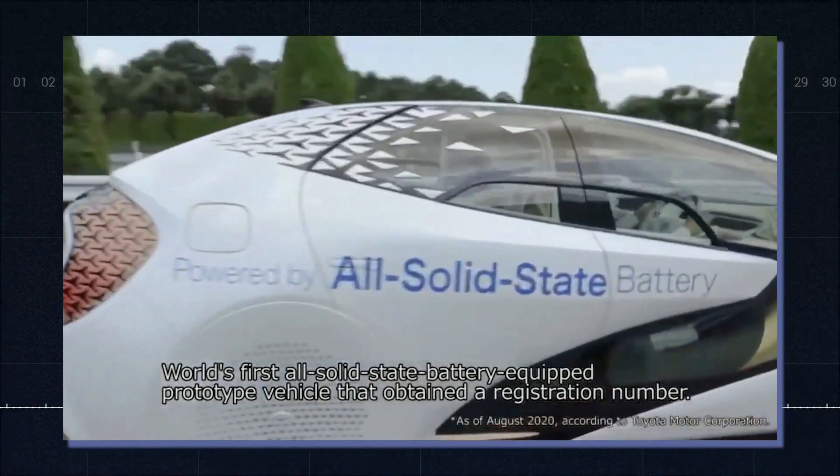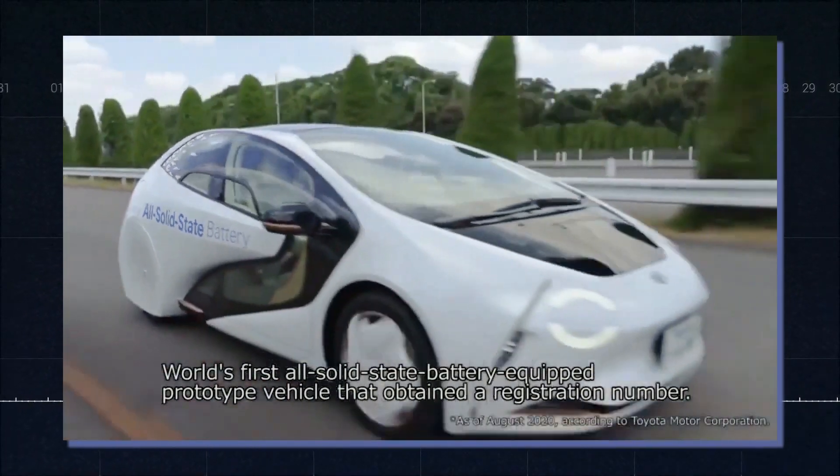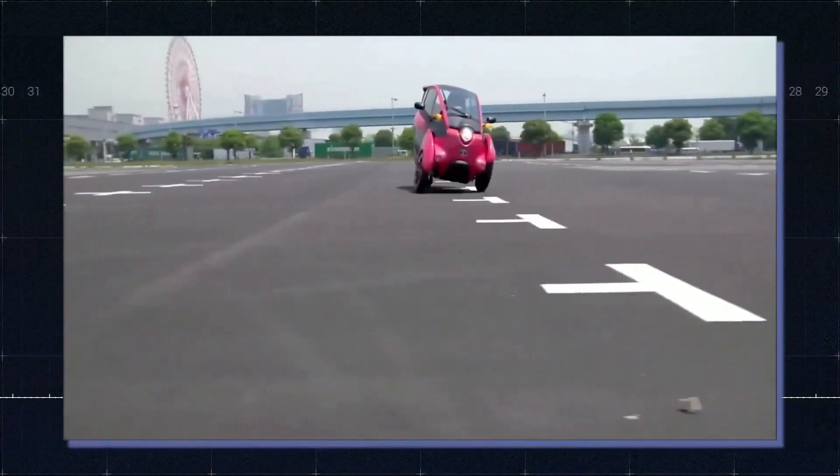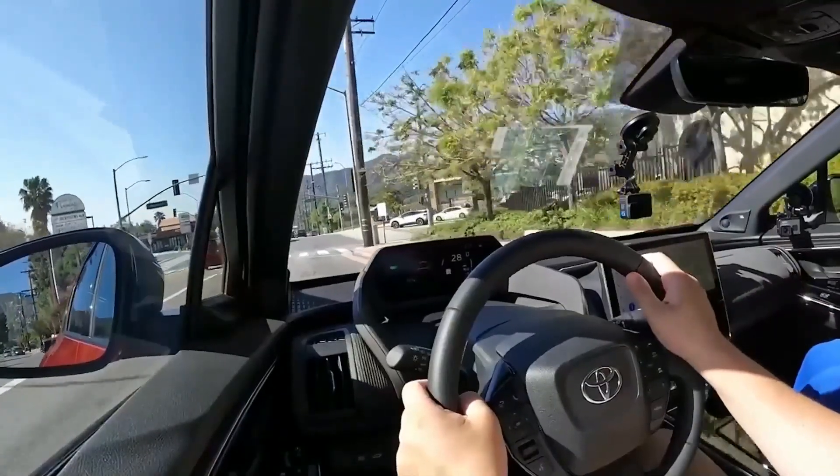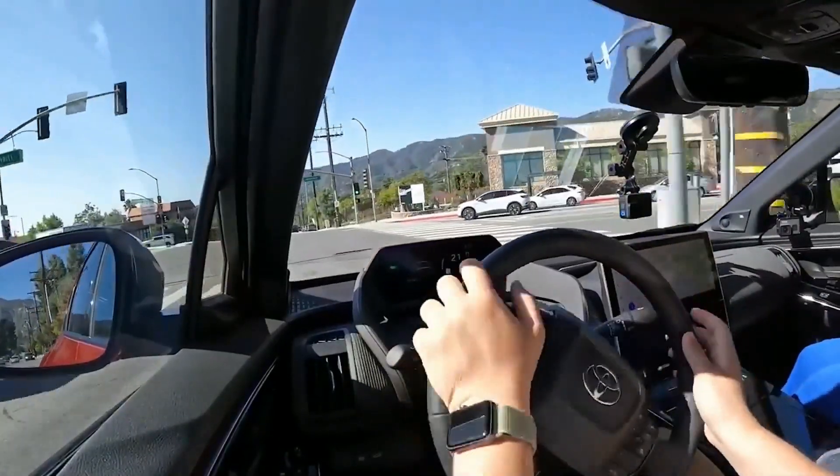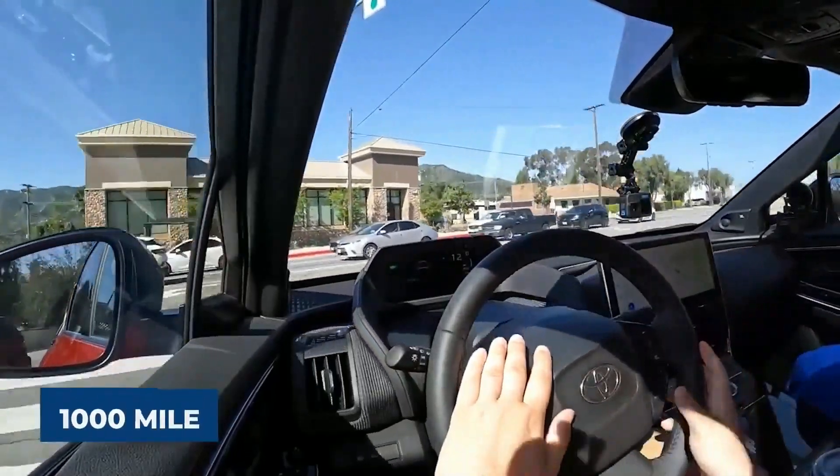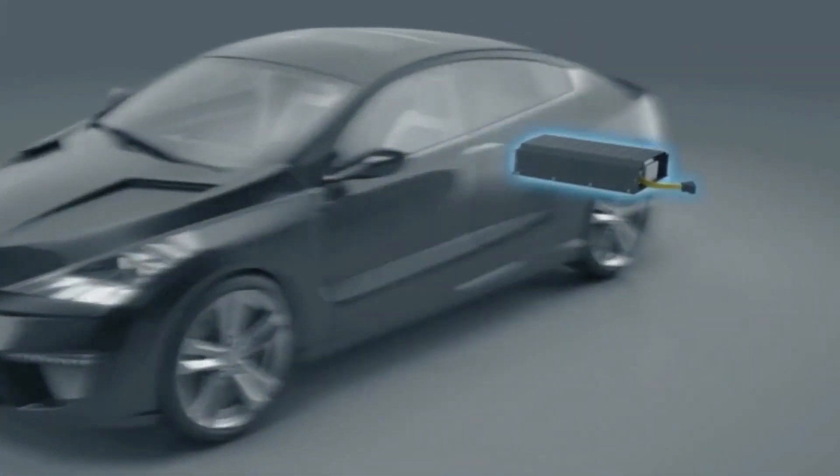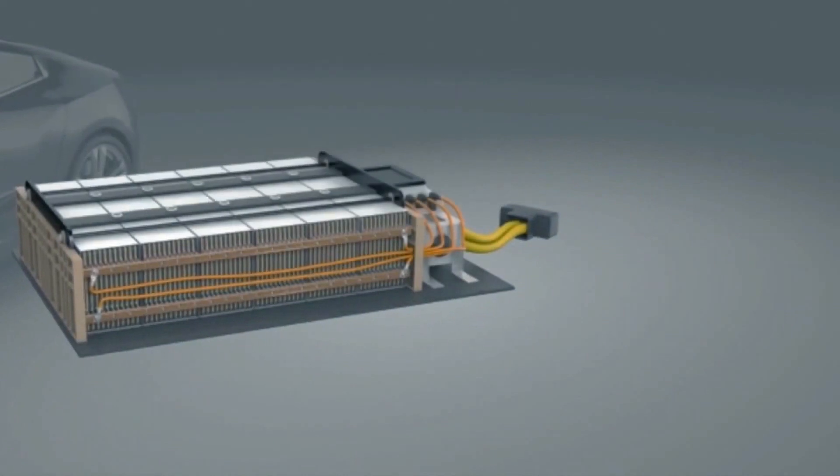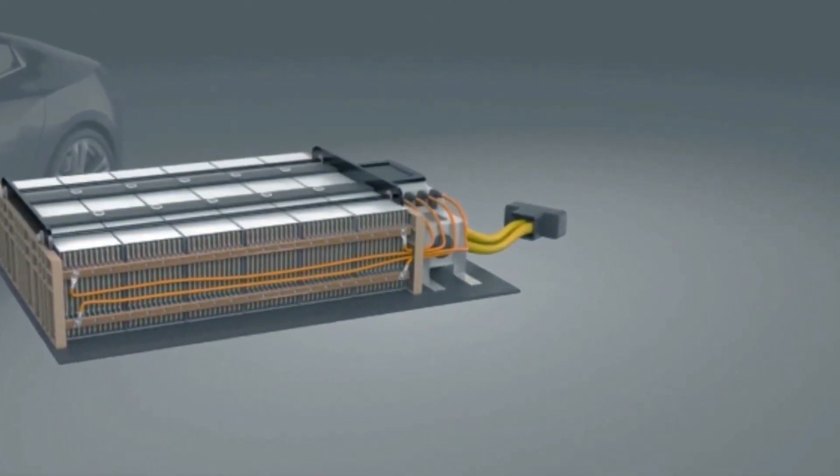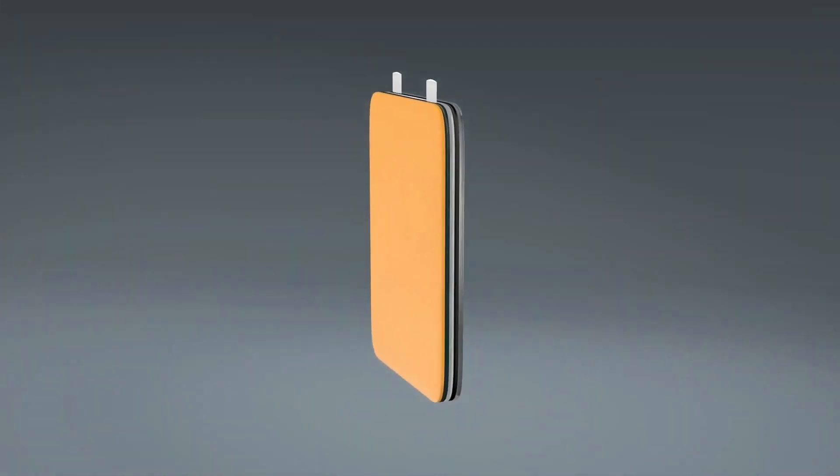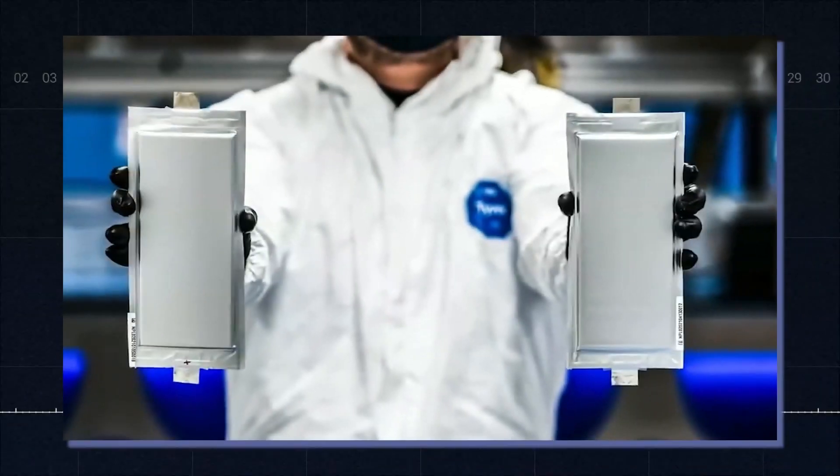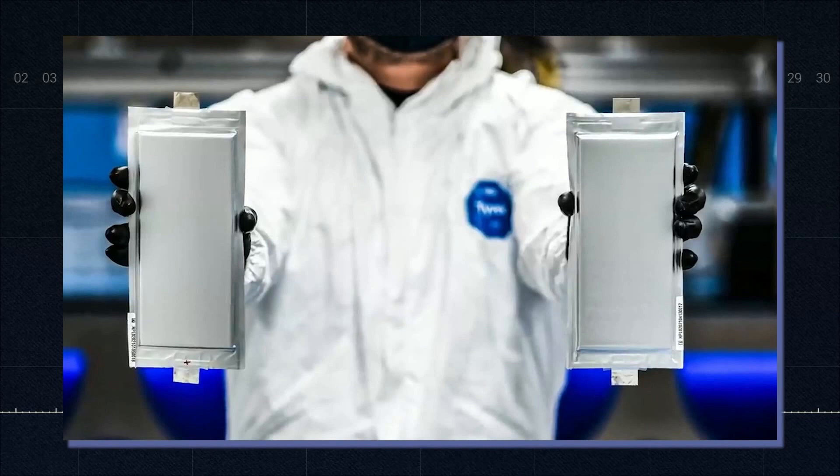This implies Toyota can greatly expand the driving range of its electric vehicles, while maintaining the same size, battery size, and mass. Toyota might be on the verge of developing the first electric vehicle with a range of more than 1,000 miles. Solid-state batteries are more robust and safer than traditional batteries. This is due to the non-flammable solid electrolyte used in solid-state batteries, which makes them less likely to catch fire. Solid-state batteries are less costly and more compact.